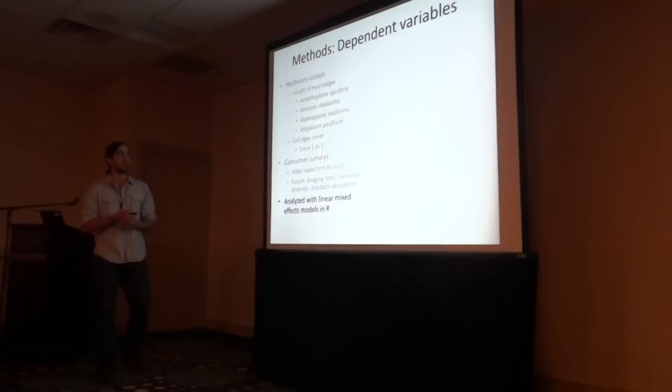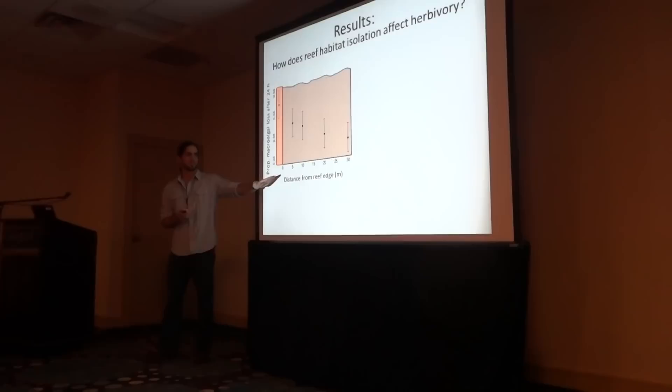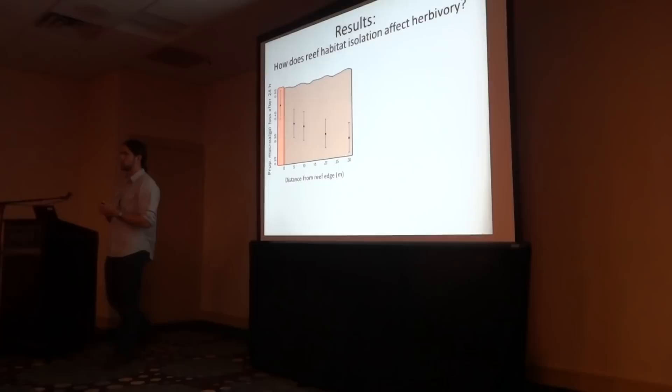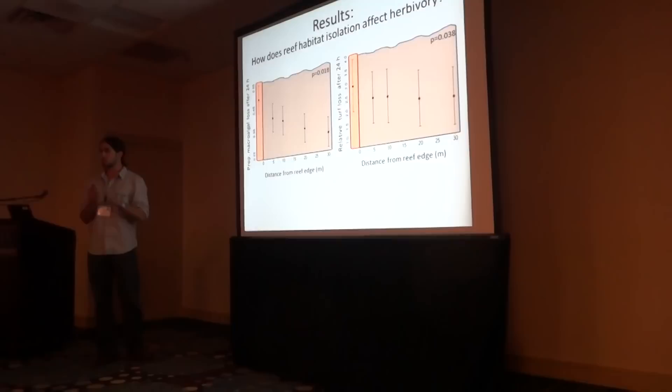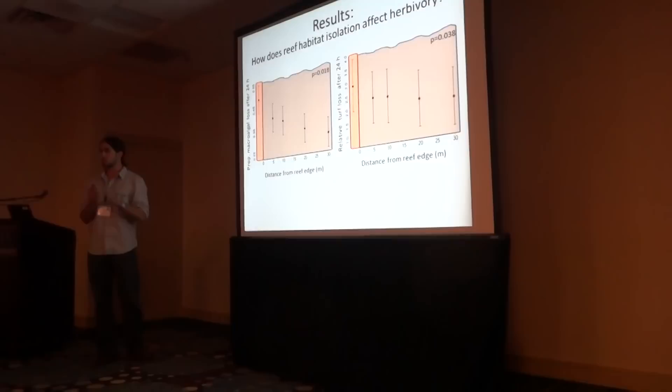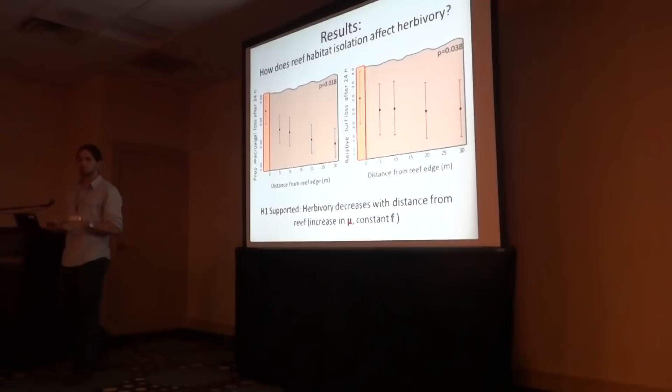That brings us to my results. To answer how reef habitat isolation affects herbivory, I looked at the effect of distance from reef edge on the x-axis versus proportion of macroalgae loss after 24 hours on the y-axis, and did the same comparison for relative turf loss on the right figure. In both cases, we see what we expected: a significant negative relationship between distance from reef and herbivory, for both macroalgae and turf algae. These data support my first hypothesis that herbivory decreases with distance from reef.